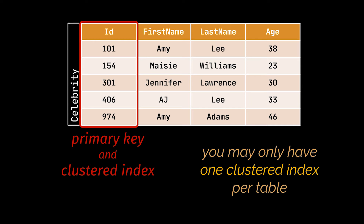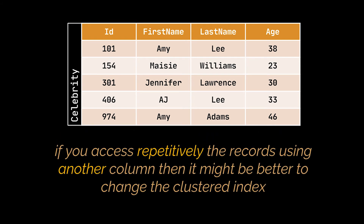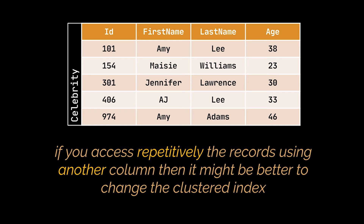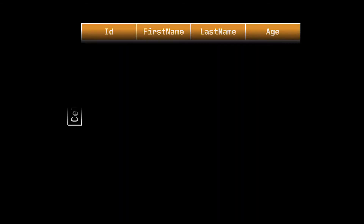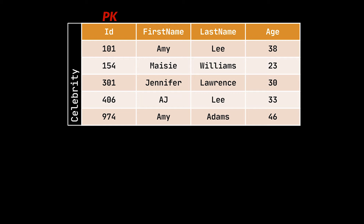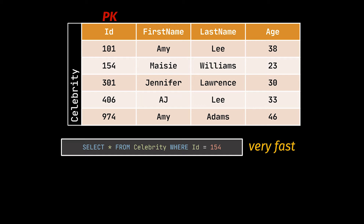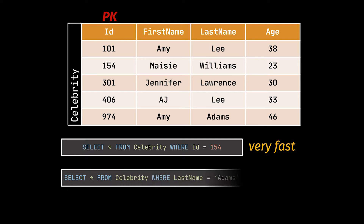But when do you want to do that? Well, if you find yourself accessing the records inside the table using another column repetitively, then it might be better to change it. Now, on the other hand, what you are allowed to have many of are non-clustered indexes or un-clustered indexes. Let's say we have this celebrity table with an id as its primary key and clustered index. If I write SELECT * FROM celebrity WHERE id equals 154, it would be very fast, not only because the id is the primary key, but also because it is the clustered index. Now if I find myself always doing something like SELECT * FROM celebrity WHERE last name equals Adams, then we might have a non-clustered index candidate.